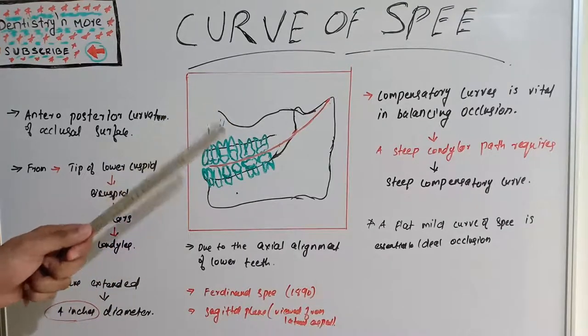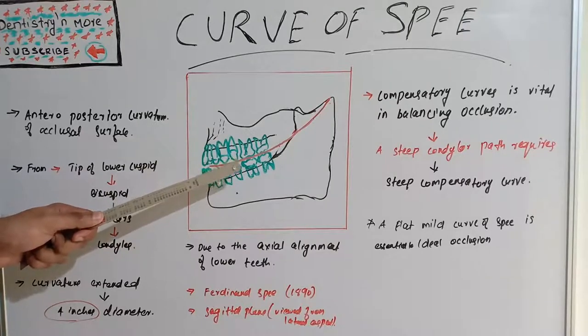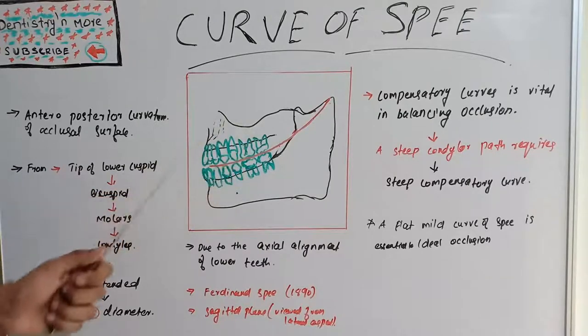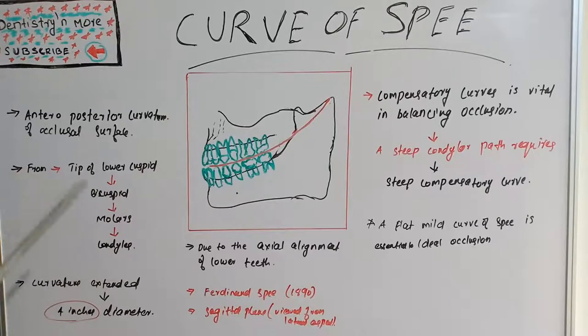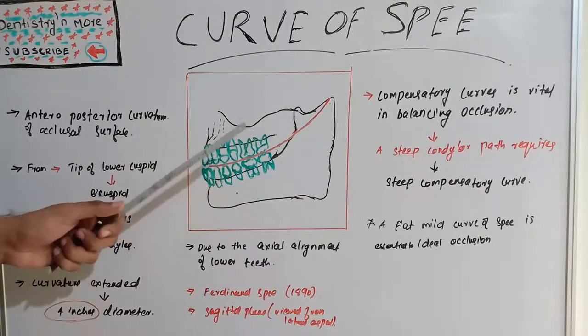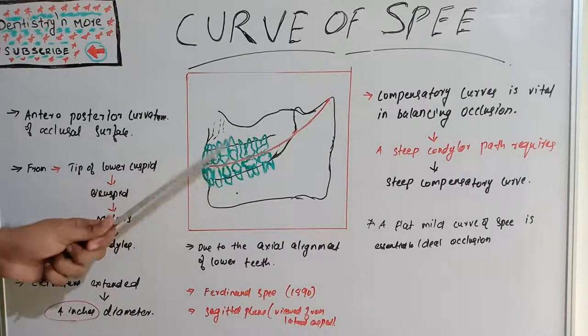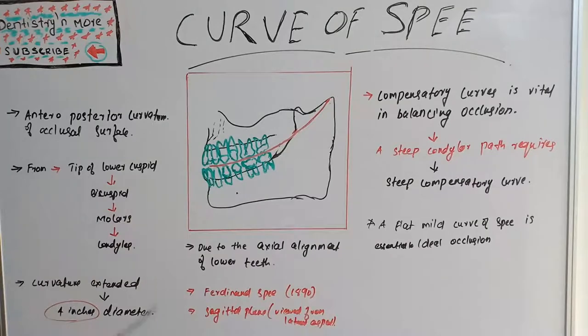This arc of a curved plane is tangent to incisal edges and the buccal cusp tips of mandibular dentition viewed from a sagittal plane. When viewed from a sagittal plane, this arc is a curved plane tangent to the incisal edges and buccal cusp tips of mandibular dentition. That is curve of spee.